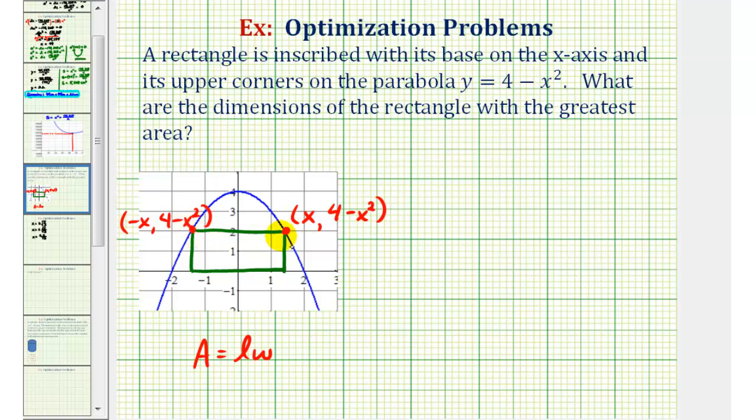Now let's list the length of the sides in terms of x. Well the y-coordinate would be this distance here which we know must be equal to 4 minus x squared.